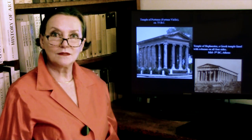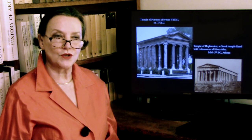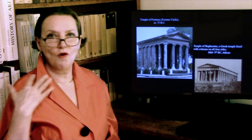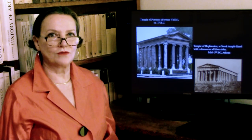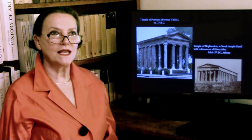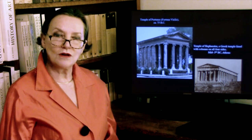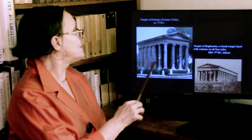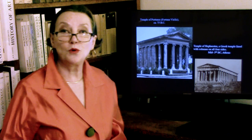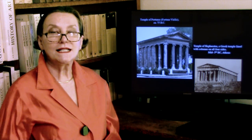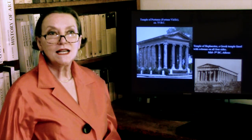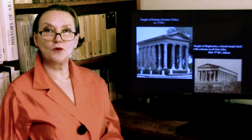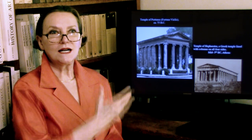In the first century BC, Rome had spread all around the Mediterranean, become wealthy, and was now building in stone. The one temple we have is the Temple of Portunus — Portunus, from Porta, is the god of harbors. Another name for this temple is Fortuna Virilis, the Temple of Fortune for those who came into the port. This temple sits right on the Tiber in Rome.